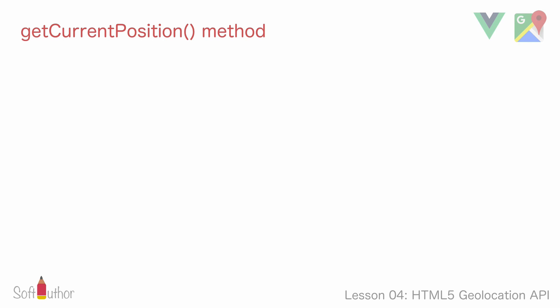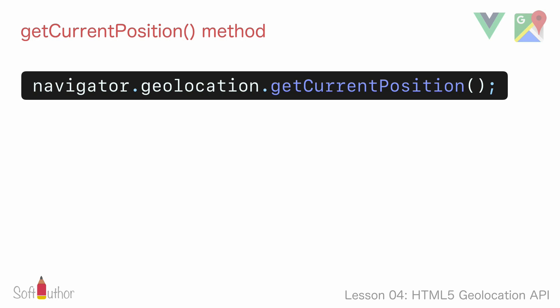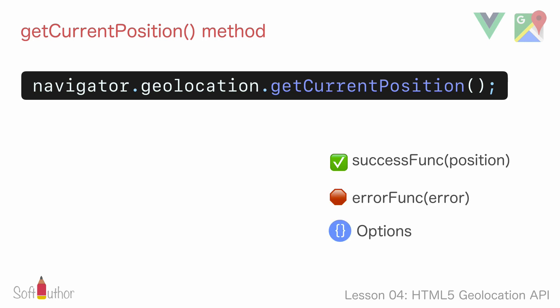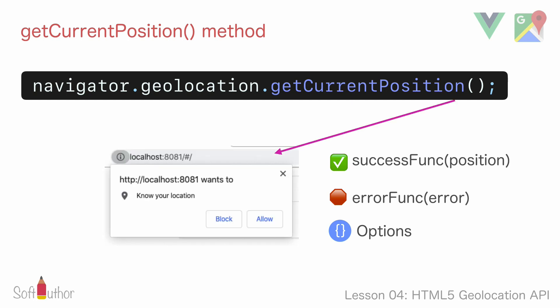Moving on — to get the geographical position, all you have to do is call the getCurrentPosition method. This takes three arguments: the first one is the success function, the second one is the error function, and the third one is an options object. The way it works is when getCurrentPosition is called, a browser notification window will appear near the URL bar.